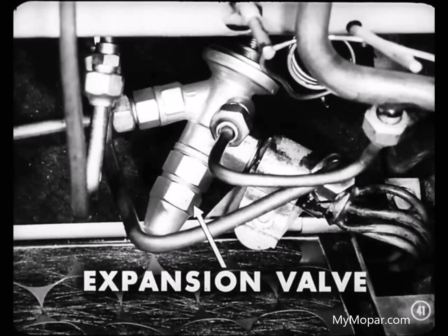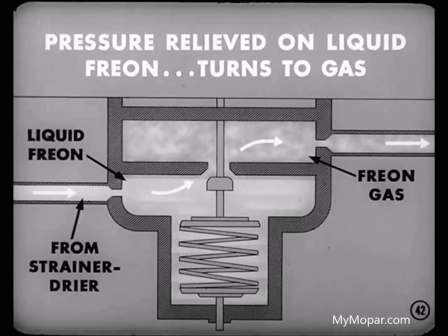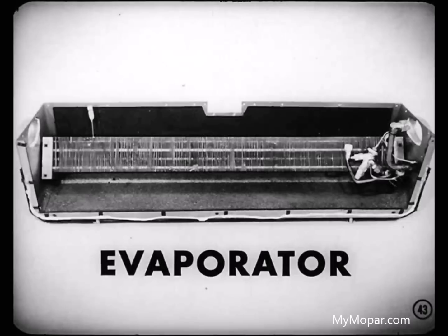Next, the Freon goes to an expansion valve, also located in the evaporator unit in the luggage compartment. You might compare this expansion valve with a valve on the steam heating system which feeds water into the boiler as needed. Actually, this expansion valve is a chamber in which the pressure on the liquid Freon is relieved so that it can start to change to a gas. So its temperature starts to drop as the pressure drops.